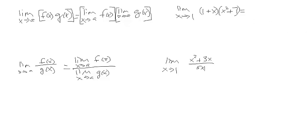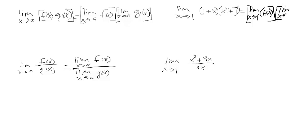We separate the two factors and write two individual limits multiplied by each other: the limit as x approaches 1 of (1 + x) times the limit as x approaches 1 of (x² + 7).